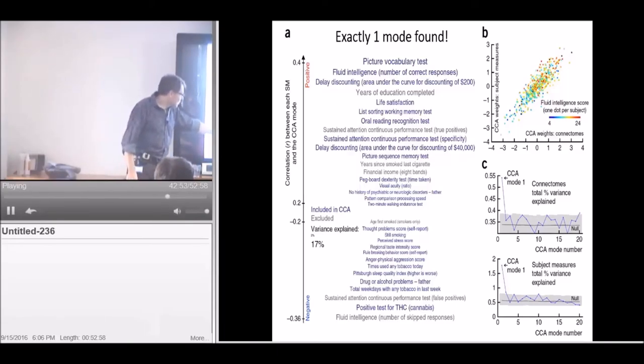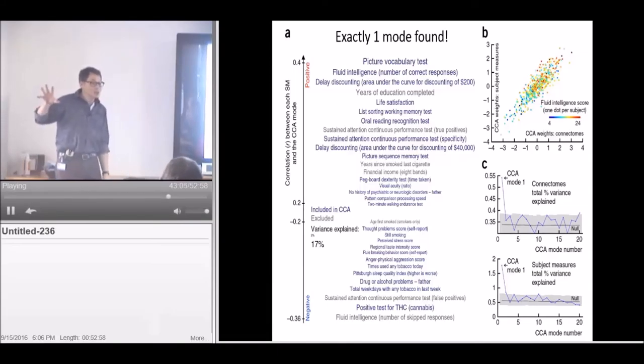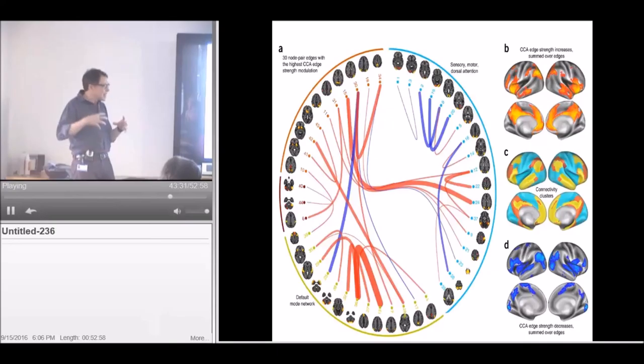Surprisingly, we got one thing, just one thing. I mean, it's better than no things, but we did get one thing that popped out and it was actually quite astounding. Basically it is positive negative life factors. Picture vocabulary, fluid intelligence, delay discounting, life satisfaction - that's on one end. What's the other end? Positive tests for THC - not have you ever smoked pot, but do you have THC in your bloodstream right now when you're getting scanned? Total weekdays tobacco use, drug alcohol problems, sleep quality, tobacco use, anger, aggression, rule breaking, thought problems. It's pretty depressing. We could find some linear combination of all the brain connectivity data that explained this kind of gross measure of positive negative life factors. Now this is just with 500 people - we now have more data and find that there are more dimensions that come out.